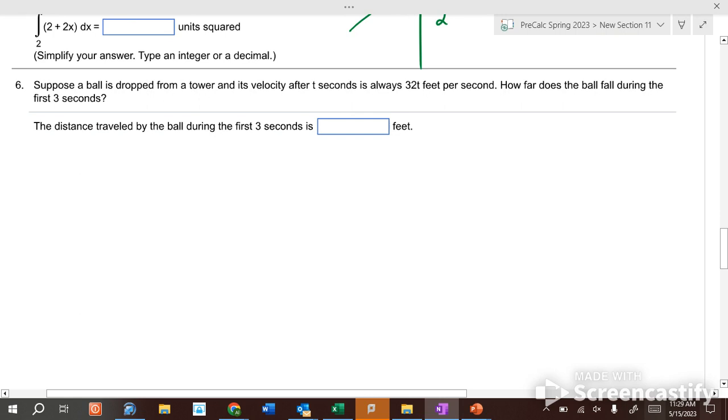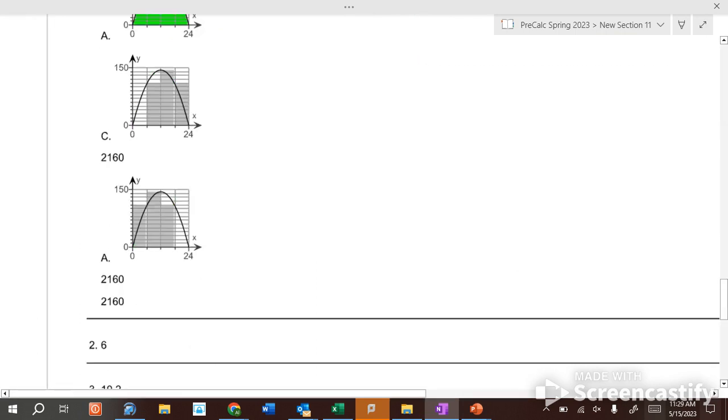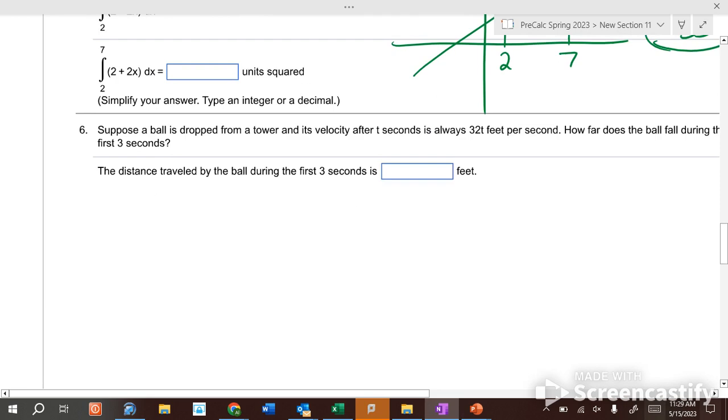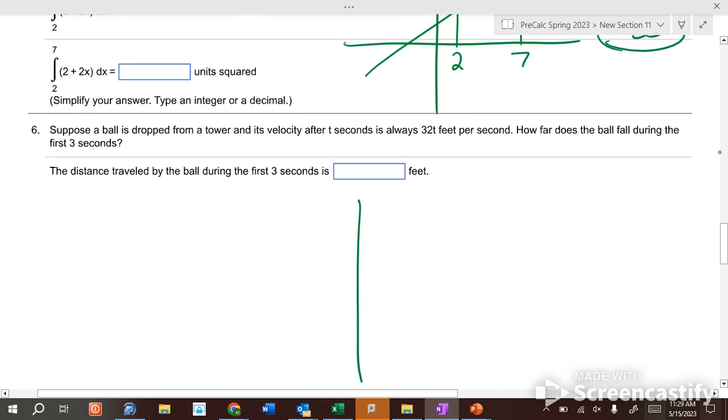This last one: suppose a ball is dropped from a tower and its velocity after t seconds is always going to be 32t feet per second. How far does the ball fall during the first three seconds? The answer is not you just multiply it by three. You have a graph with a slope of 32. This is 32t, y equals 32t.